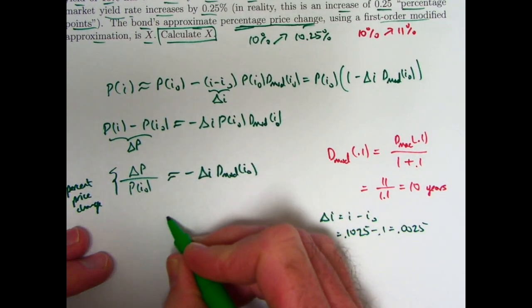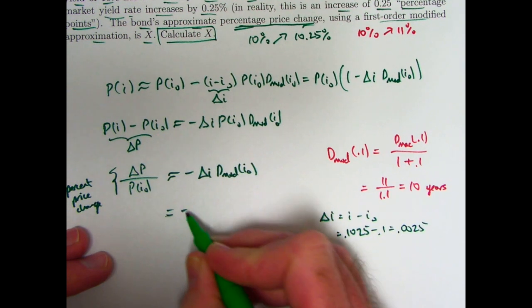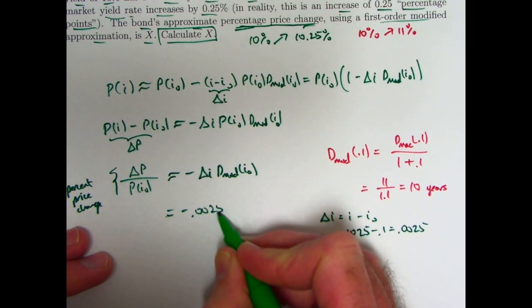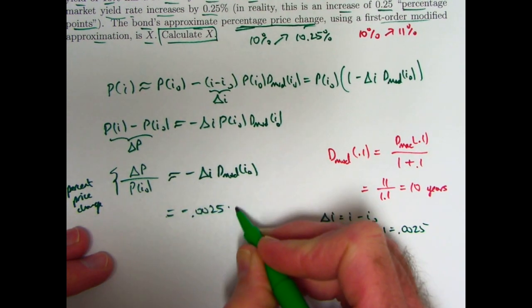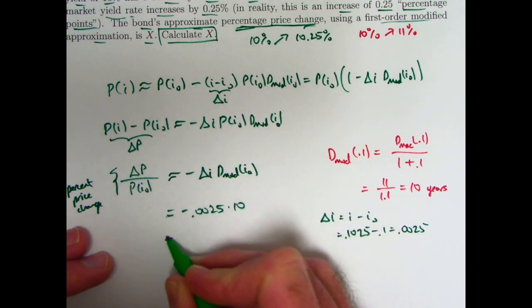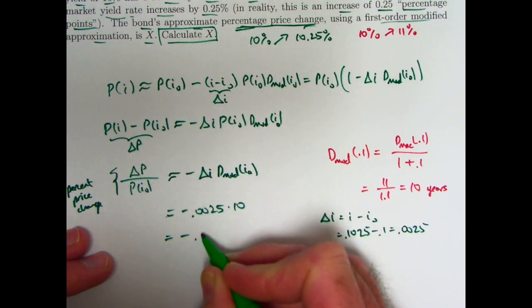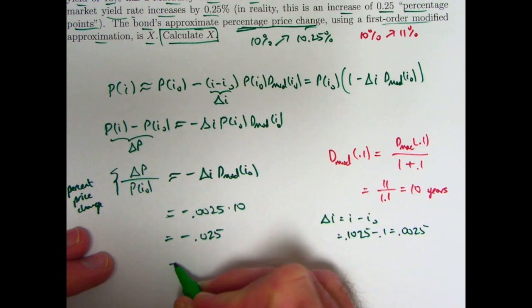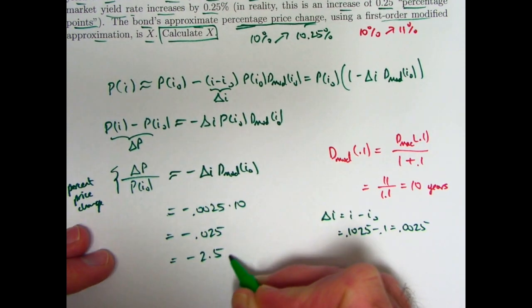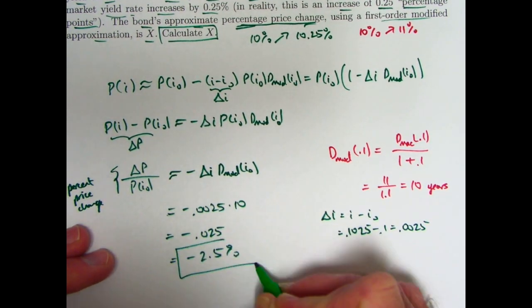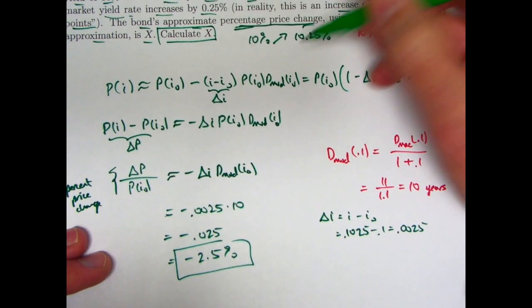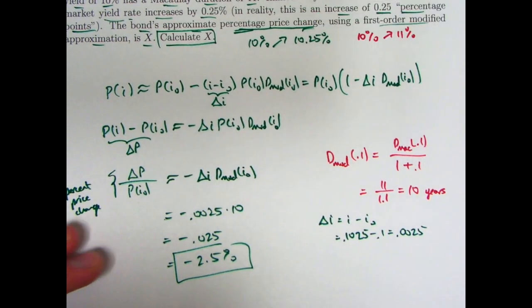Go ahead and just plug these numbers in now. This becomes negative 0.0025 times the modified duration, which is 10. Multiply that, you're going to get negative 0.025, which is negative 2.5%. And that is the answer to the question, to calculate X, which is the percent price change.